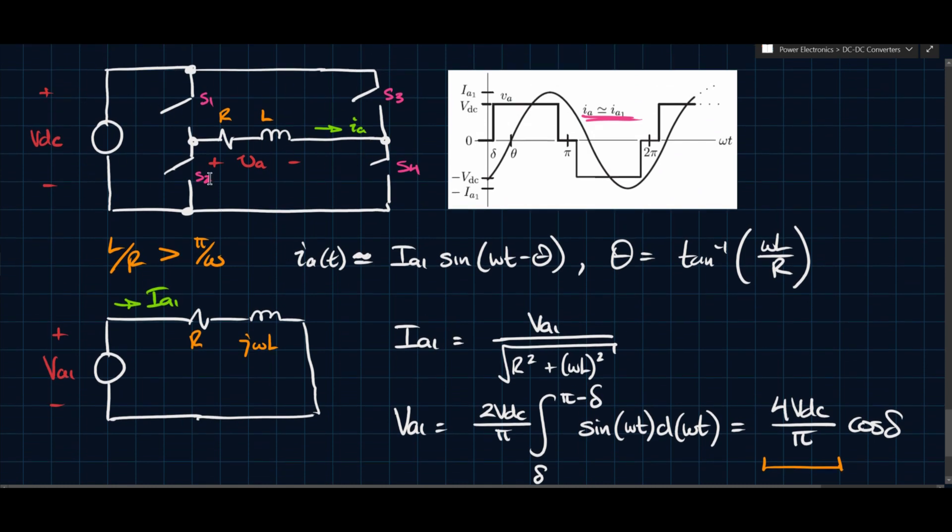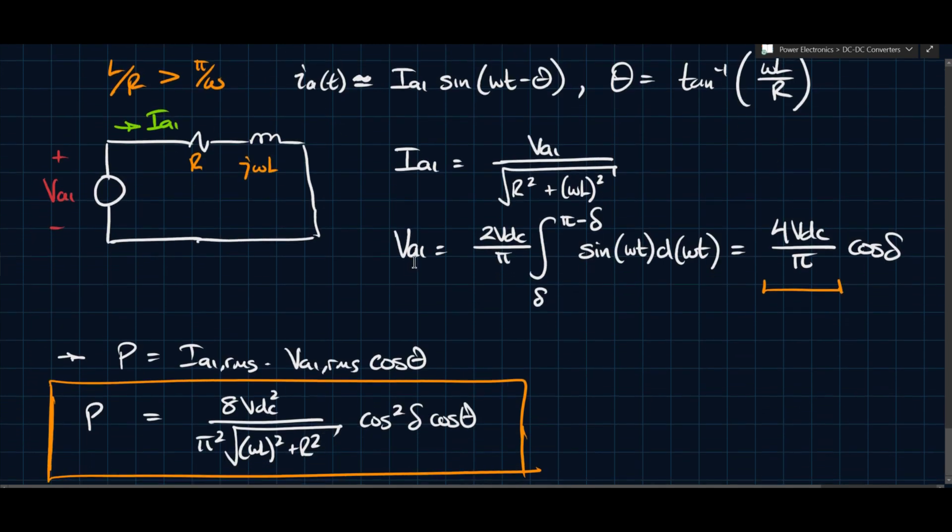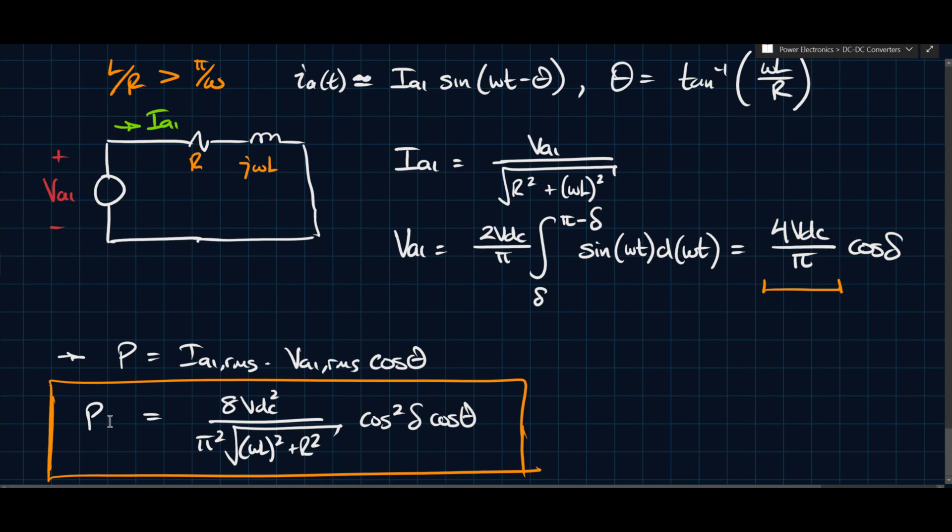How when this is an active load or there's a voltage source here, some type of voltage source. It can be another converter. It can be like a component of a motor's EMF or something. We'll see that once there's another source here or there are active components in the load, we'll see that that gives us another control handle on how we can regulate or control the power that's being transferred.